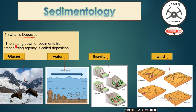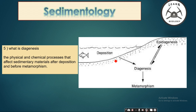The fourth process of sedimentology is deposition. The settling down of sediment from a transporting agency is called deposition — settling from glaciers, water, gravity, and wind.